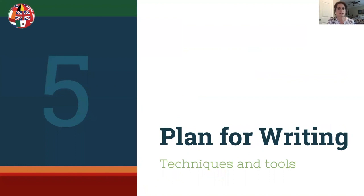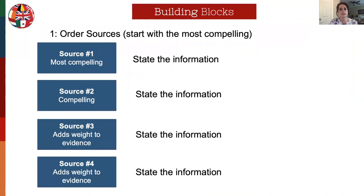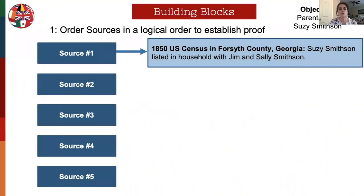Our last section is planning for writing. I'm going to cover some tools and techniques to give you ideas on how to plan for the writing phase. The techniques we'll cover are building blocks, syllogisms, and multiple hypotheses. Let's start with building blocks. One approach is to start with the most compelling source, then add the next most compelling source, then add sources that add more weight, and so on. Be sure that as you're stating the sources you're also stating the information found in those sources. Another approach that works well, especially with indirect evidence, is to place the sources in the most logical order to start getting that flow of logic going.